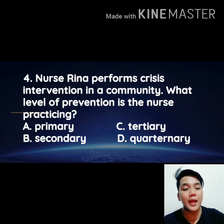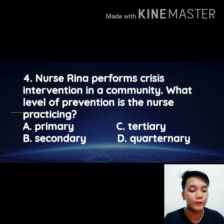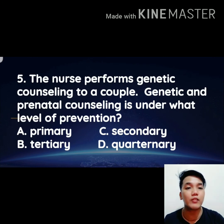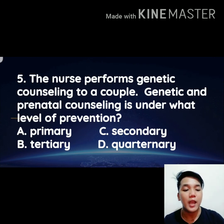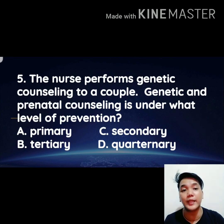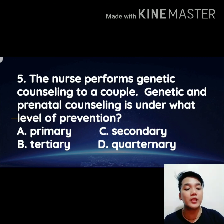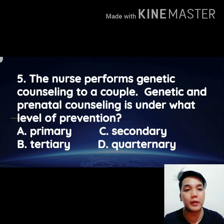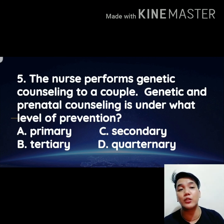Number five: the nurse performs genetic counseling for a couple. Genetic and prenatal counseling is under primary level of prevention. Since it is counseling aimed at prevention before illness occurs, letter A, primary level of prevention, is the correct answer. These are the five common board exam questions about levels of prevention.